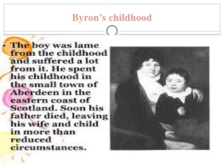Alongside Byron's strong attachment to boys, often idealized as in the case of Edleston, his attachment to women throughout his life is an indication of the strength of his heterosexual drive. In 1806, Byron had his early poems privately printed in a volume entitled Fugitive Pieces, and that same year he formed what was to be a close lifelong friendship with John Cam Hobhouse, who stirred his interest in liberalism.